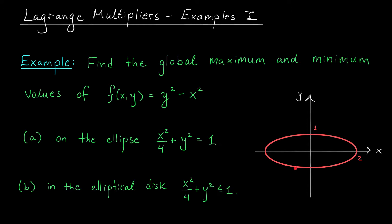We're looking for the max and min along this red boundary. In part b, we're looking in the elliptical disk, x squared over 4 plus y squared is less than or equal to 1. So in b, we're not just looking along the boundary, we're also considering the interior.